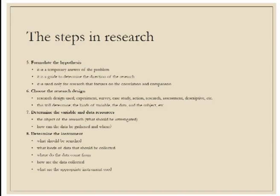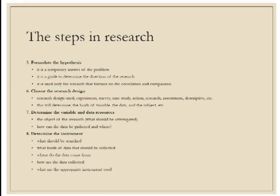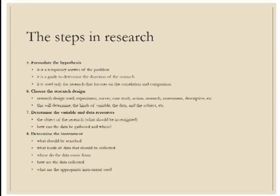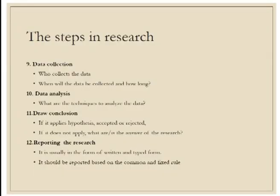The seventh step is to determine the variable and data resources — the object of the research, what should be investigated, how the data can be gathered, and where it should be gathered. The eighth step is to determine the instrument. After the data-gathering process is clear, we determine what tools or instruments to use, considering: what should be searched, what kind of data should be collected, where the data comes from, how data are collected, and what the appropriate instruments are.